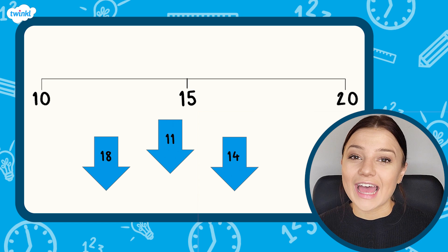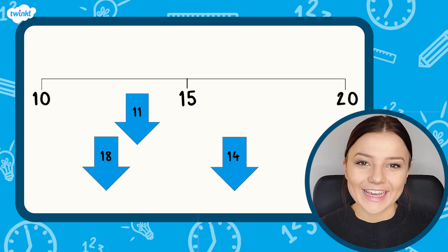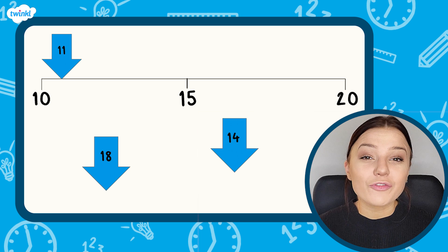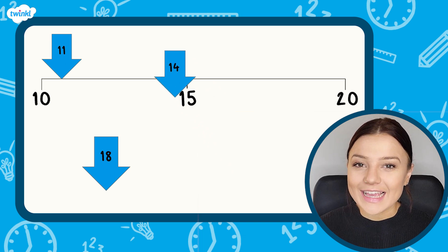11 is just 1 more than 10 which is approximately here. 14 is 1 less than 15 so it will come just before the halfway point which is approximately here.